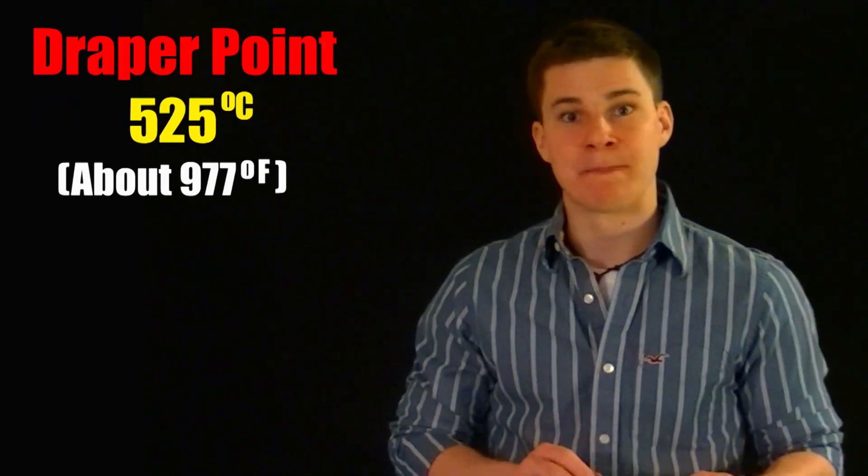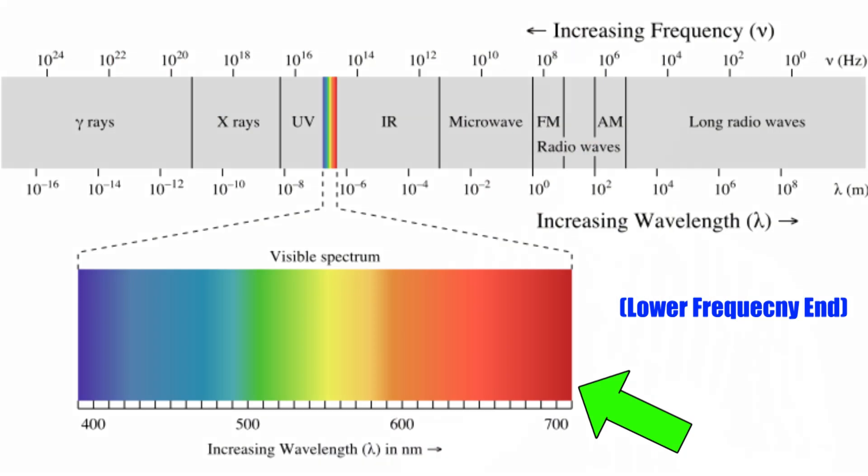But when matter reaches a certain temperature, known as the Draper point, which is around 525 degrees Celsius, it begins to give off light in the lower ends of the visible light spectrum, which is why molten glass glows red.